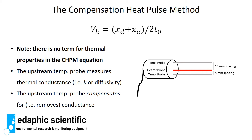One thing to note from the compensation heat pulse method equation is that there is no explicit term for thermal properties. That's because in the three-probe configuration, the upstream temperature probe records the thermal properties of the stem. We say the upstream probe compensates for or removes conductance from the equation — it compensates for the way heat diffuses through the stem — so we don't need a separate term for thermal diffusivity or thermal conductance.